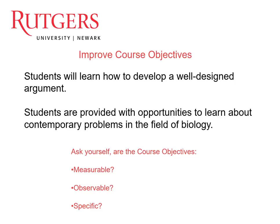If we look at some maybe not as well-designed course objectives: the first one — 'students will learn how to develop a well-designed argument'; the second — 'students are provided with opportunities to learn about contemporary problems in the field of biology.' Ask yourselves: are these course objectives measurable, observable, and specific? No.